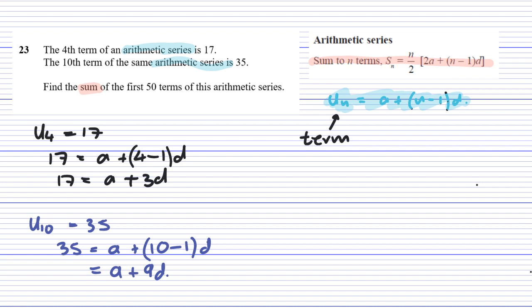Now, if I take these two and write them next to each other, I can solve them like simultaneous equations. So let's take this one first, A plus 9D.